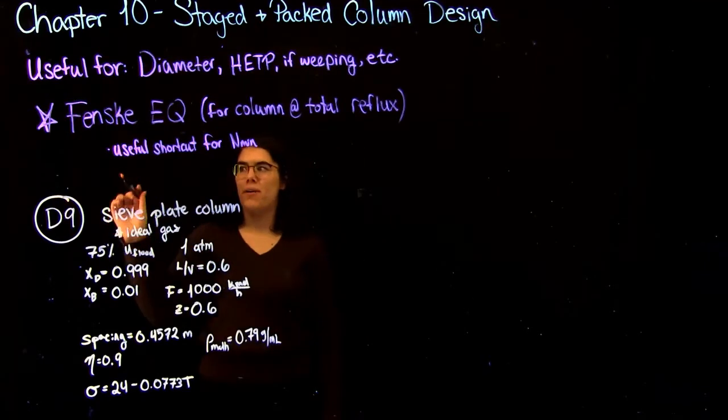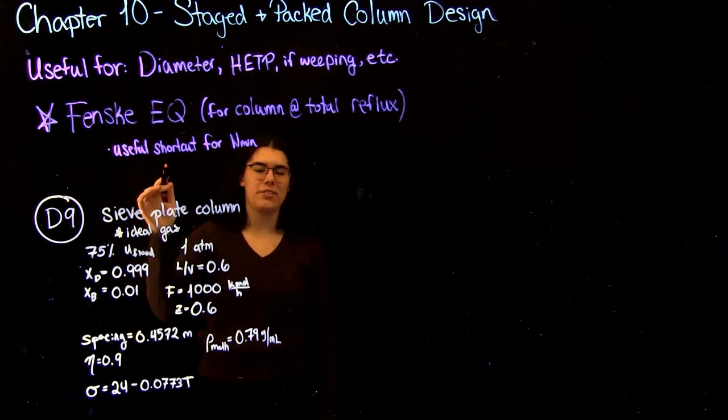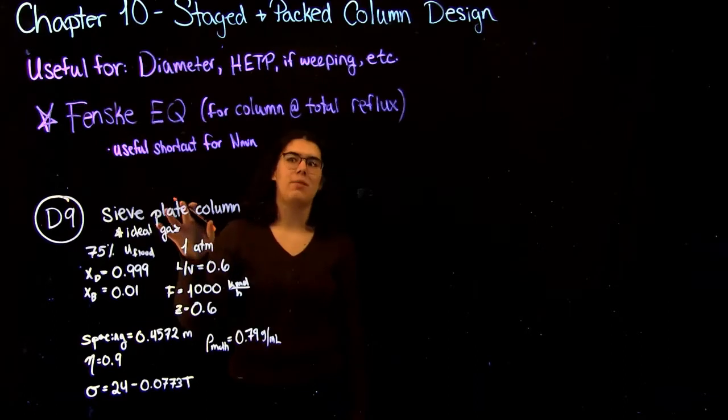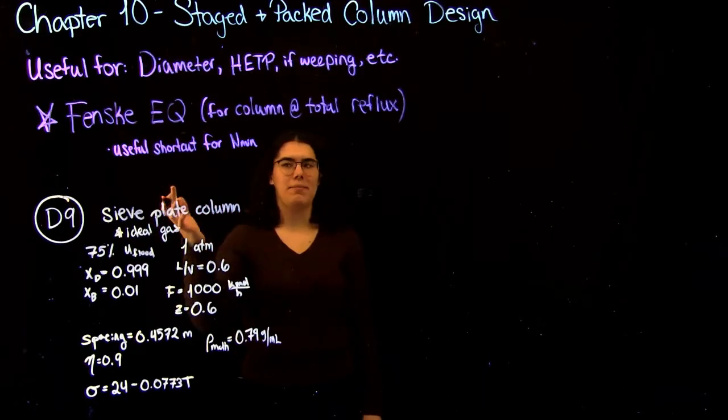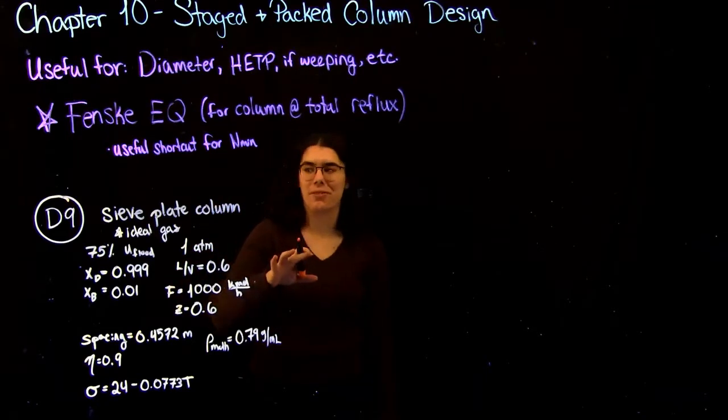One other really important takeaway that I'm not going to cover in this video but that you should definitely look at is the Fenske equation. You can find this in Chapter 10 in your textbook, and it's a really useful shortcut to help you find n_min, which is the minimum number of stages at total reflux. So definitely put that on your formula sheet.